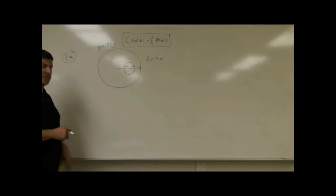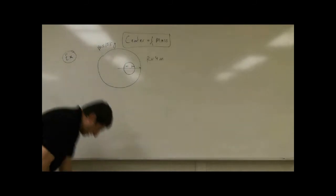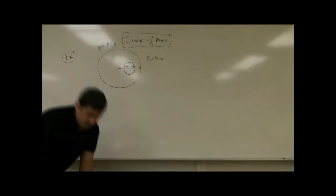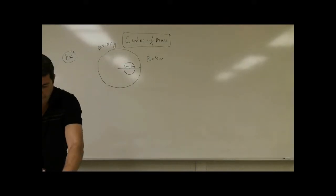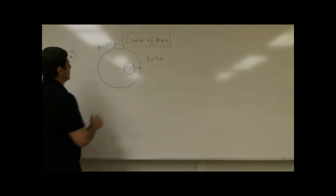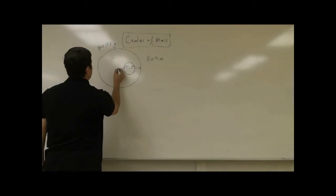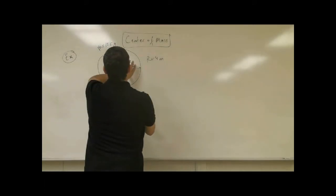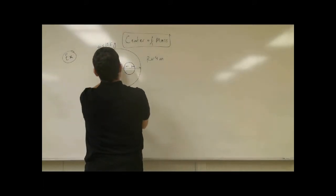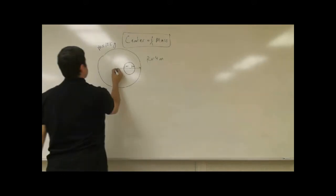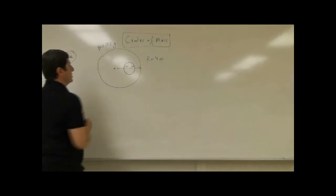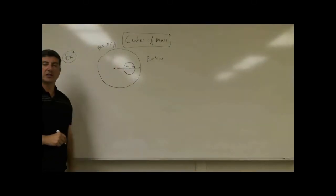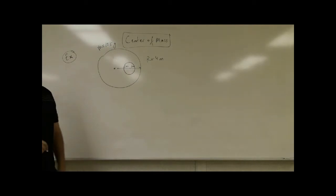Well, from logic, if you think about it — because there's a hole here, more of the mass will be over there. So the center of mass will shift and be somewhere about here, away from the hole. So how do we do that?